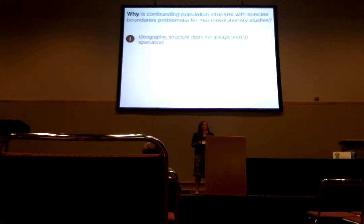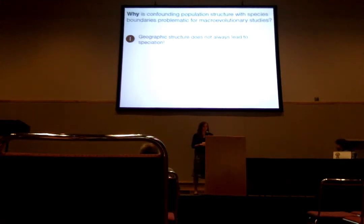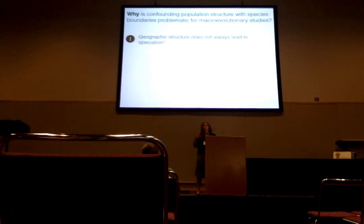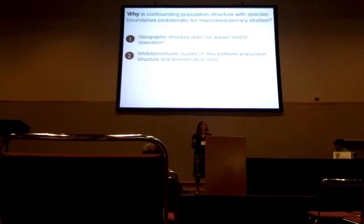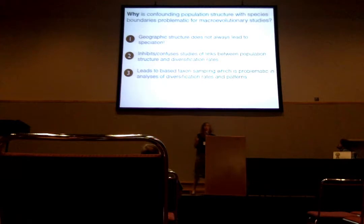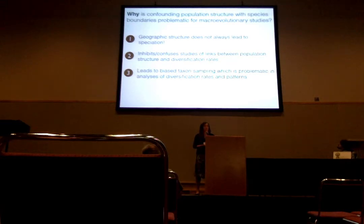My goal today is to talk about the implications this has for studying larger-scale patterns in diversity. Specifically, why is confounding population structure with species boundaries problematic for macroevolutionary studies? I'll make three brief points: first, geographic structure does not always lead to speciation, and defining geographically structured populations as species makes interpreting the diversification process very difficult. Second, it inhibits our ability to study the link between population structure and diversification rates. Third, it leads to biased taxon sampling, which is problematic for analyses of larger-scale diversification rates and patterns.